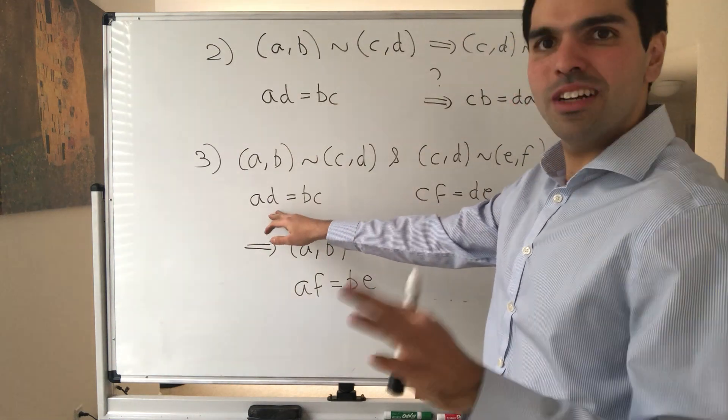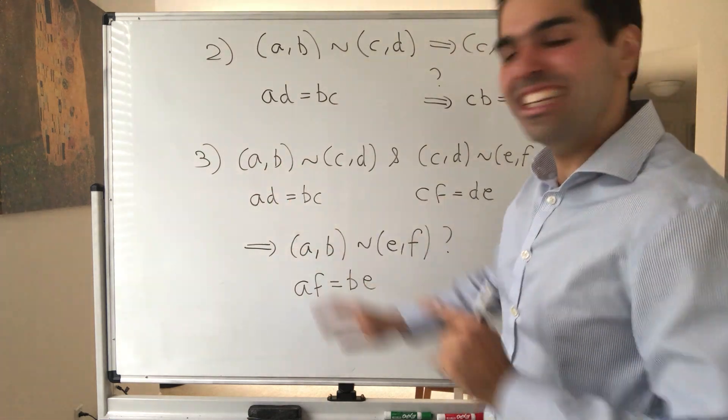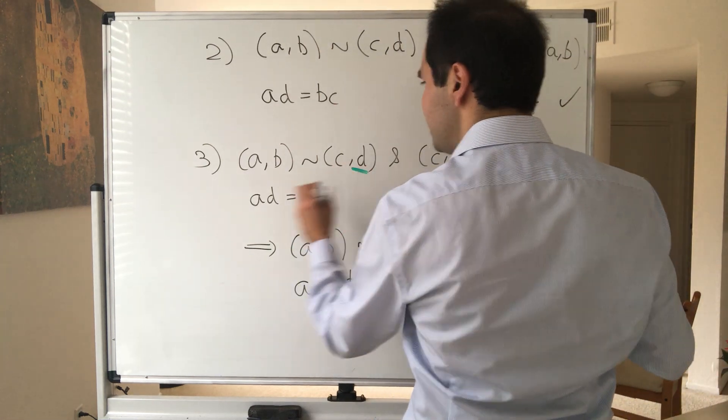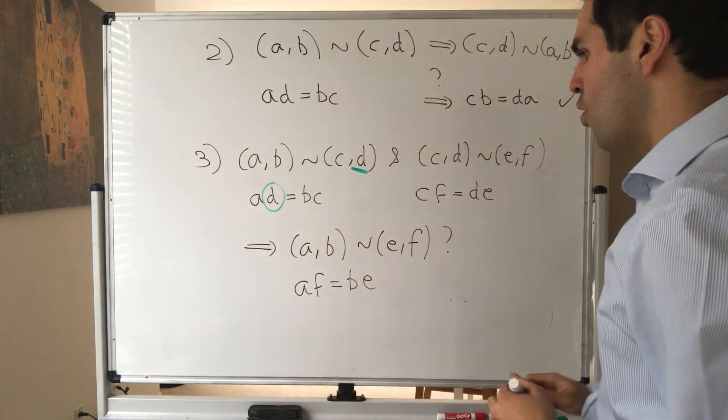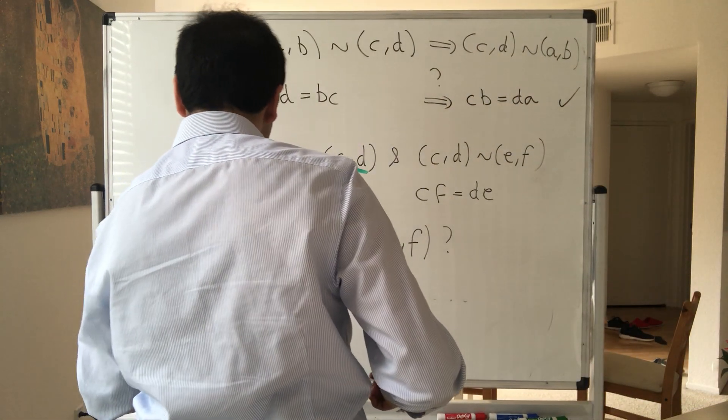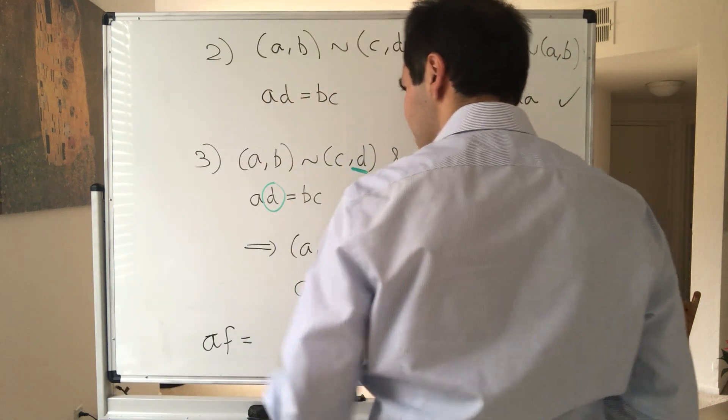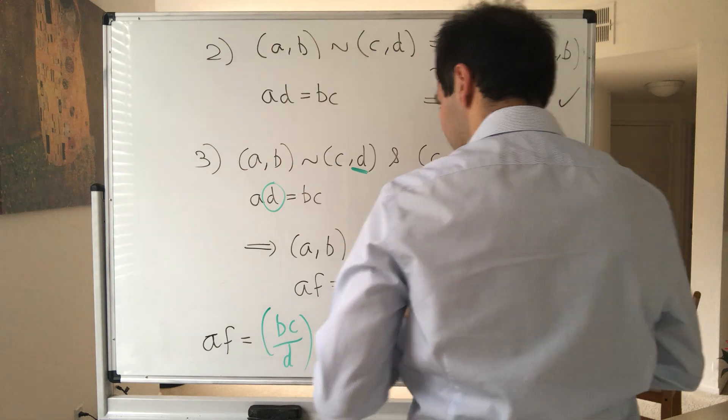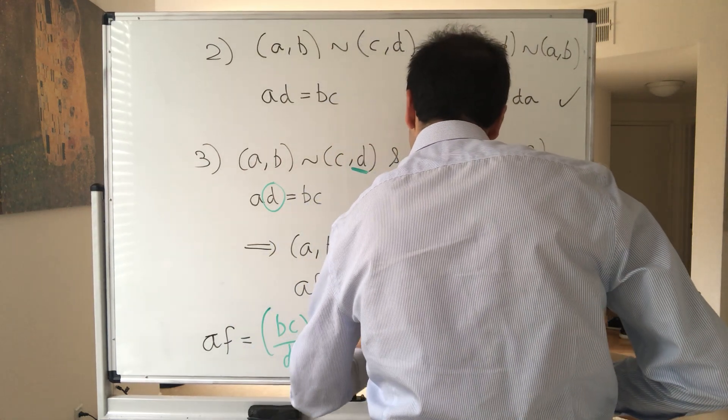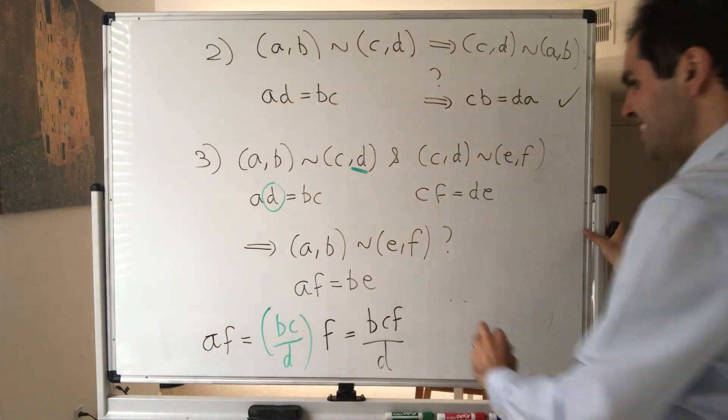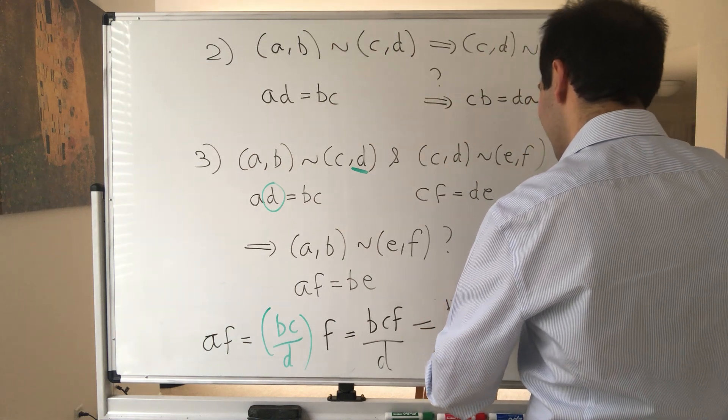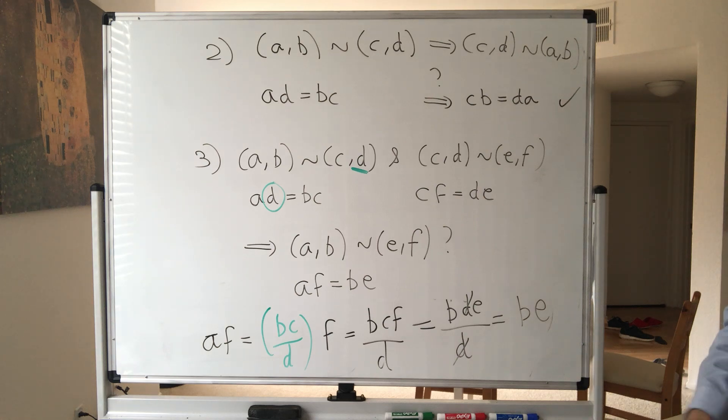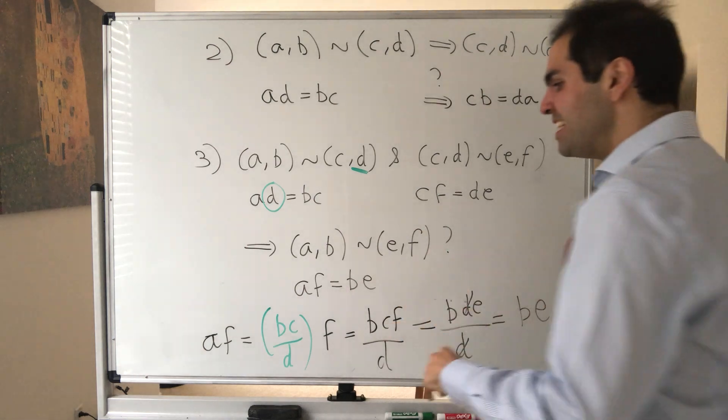But here's the thing: we can actually solve for things here. And basically what we want to do is solve for one variable in terms of the other. But just be careful, we cannot divide by zero. So we really have to see what is nonzero and what is zero. I mean, for instance, what we do have is that D is nonzero, so A is just BC over D. So in other words, what do we have? AF is simply A, so A is BC over D times F, and that becomes BCF over D. But what is CF? That's just DE. So we get BDE, like a PDE but with a D over D, and that is BE. So indeed AF is BE. So indeed now we're happy this is an equivalence relation.